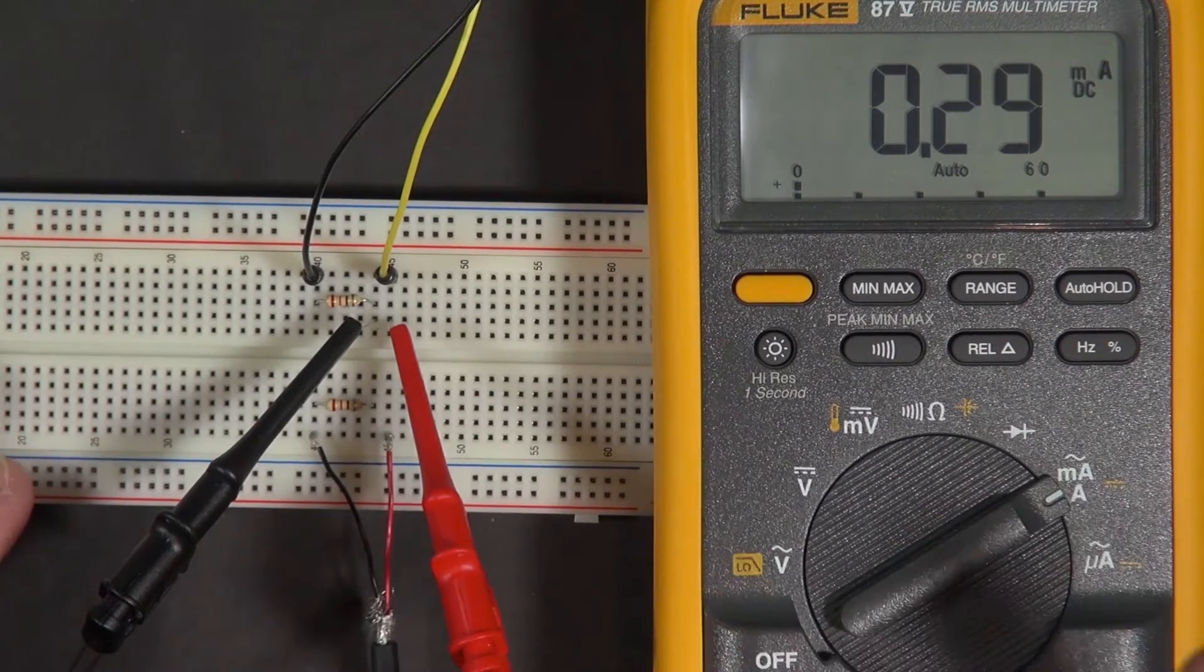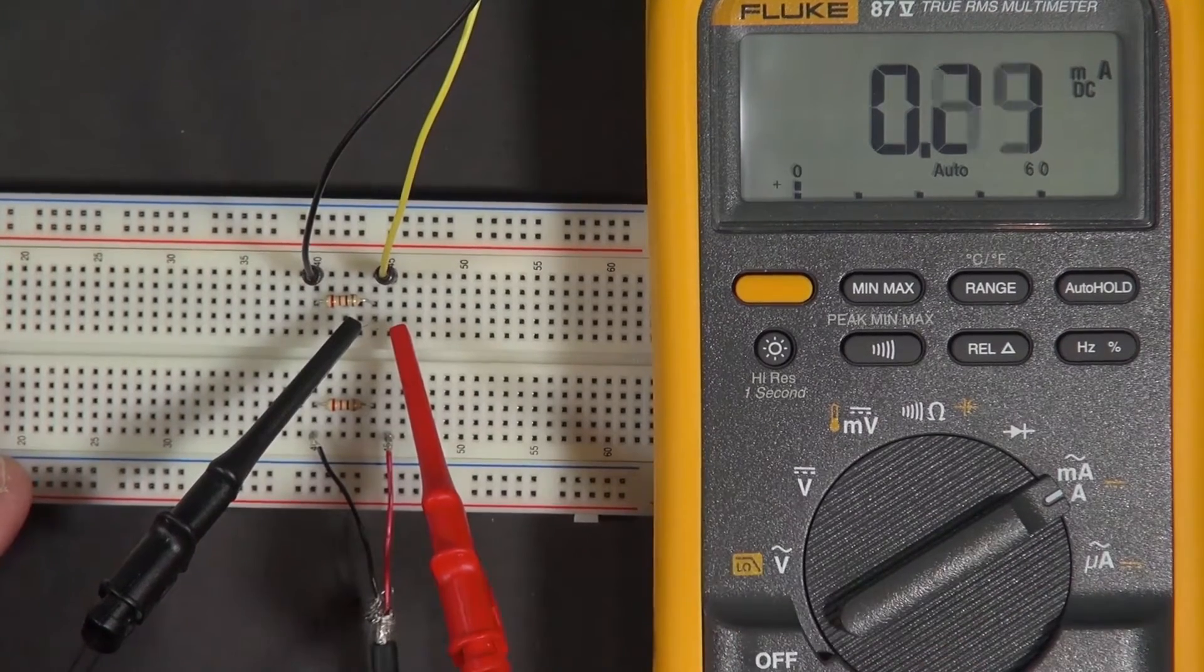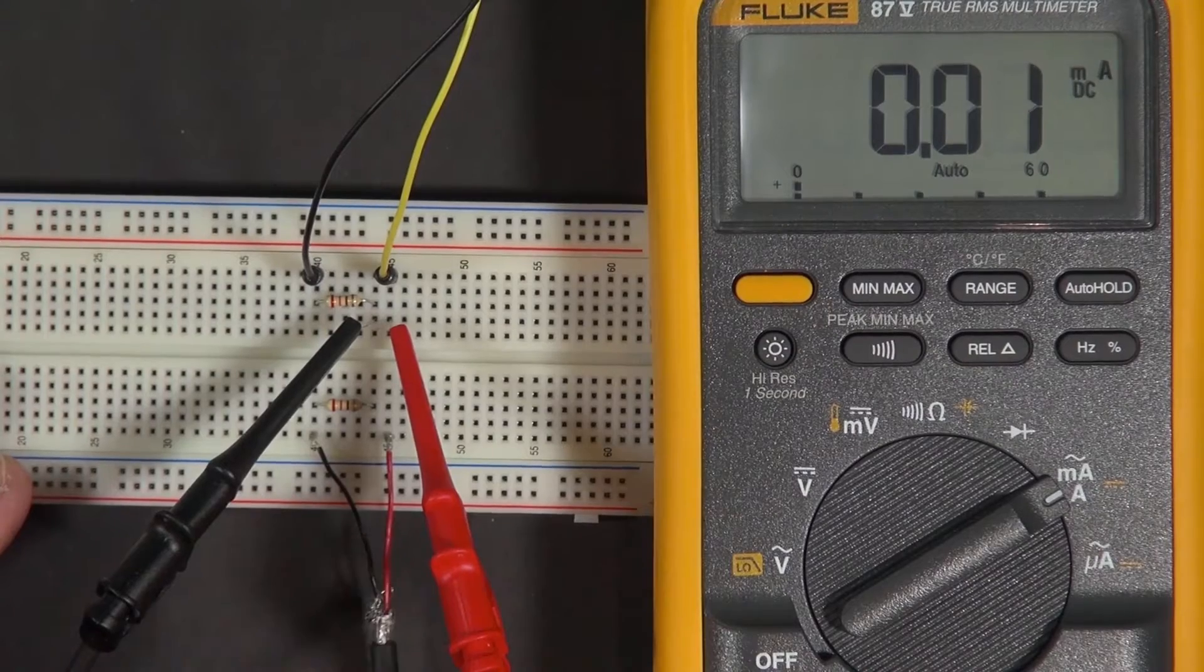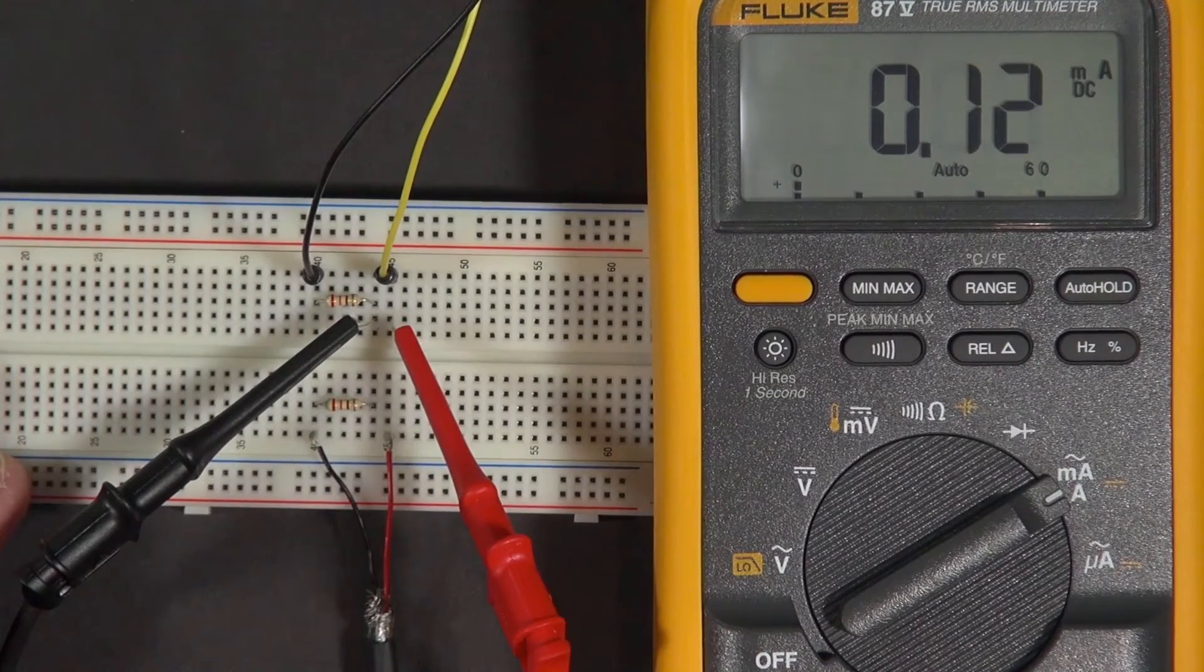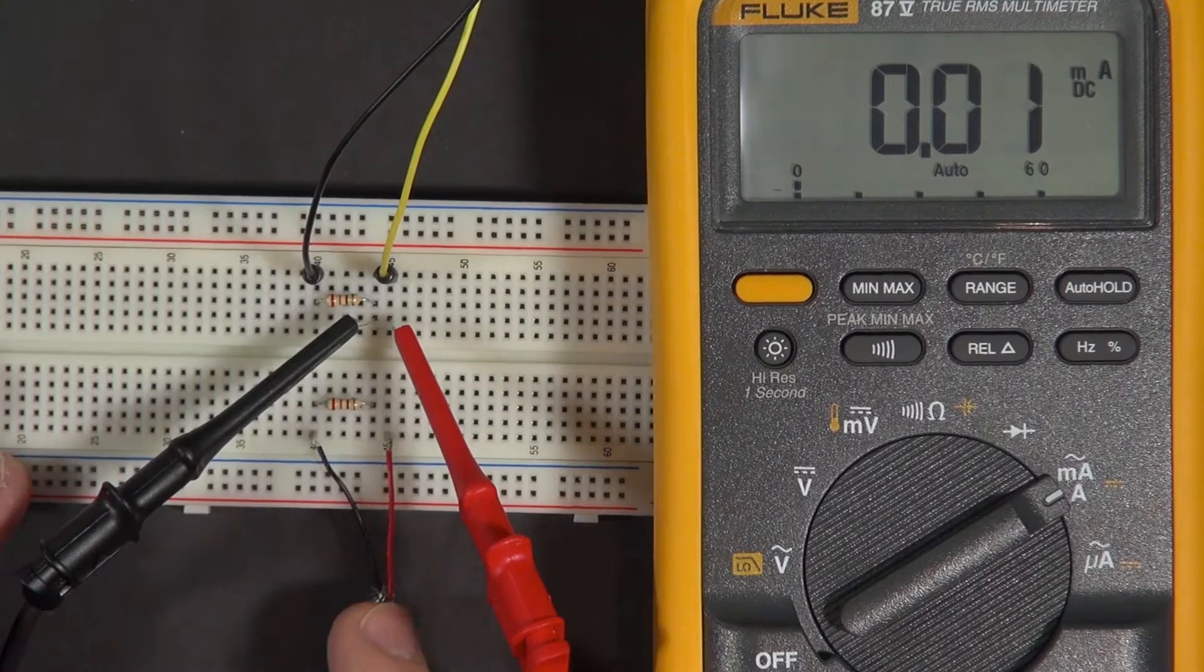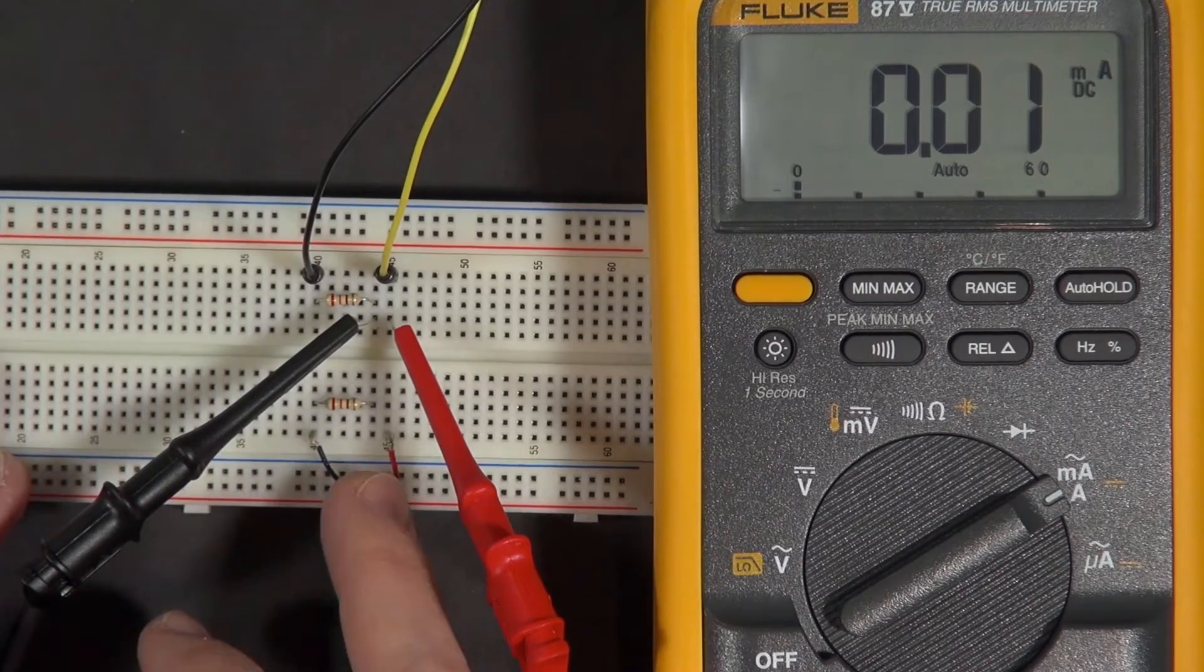The question is, what can we do about this? At the bottom we have plenty of current because this is a power supply. Power supplies are generally designed to be able to deliver a lot of current and maintain their voltage.